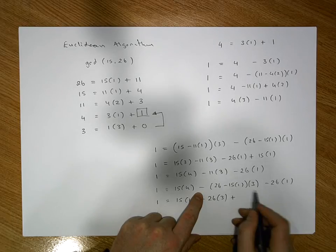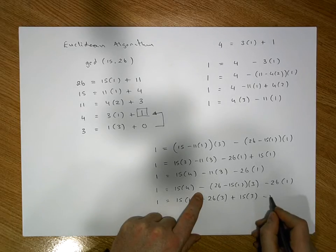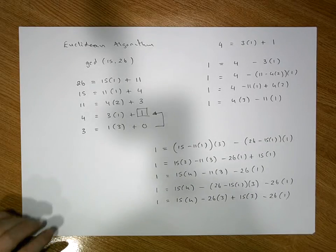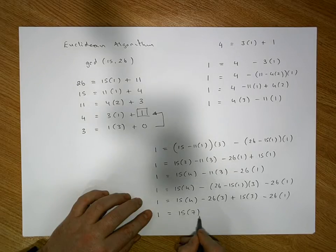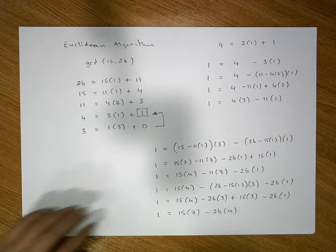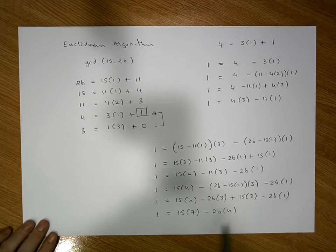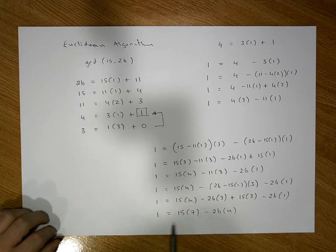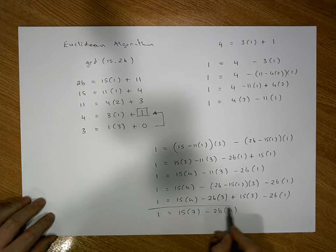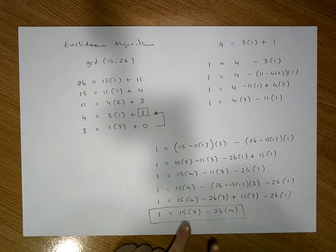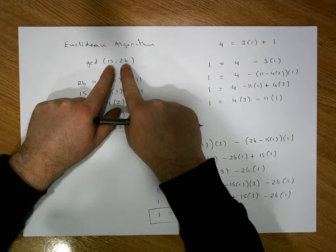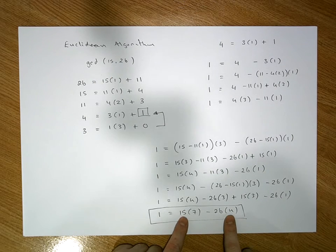Collecting the common terms together: there are 4 instances of 15 and 3 more, giving 7 total, so this is 15 times 7. There are 3 instances of 26 and one more, all negative, giving minus 26 times 4. So we've put this into what's known as a Diophantine equation. This is the most important line: through back substitution, we've determined that 1 equals 15 times 7 minus 26 times 4.